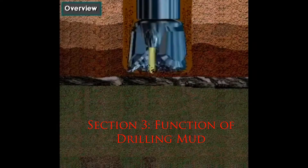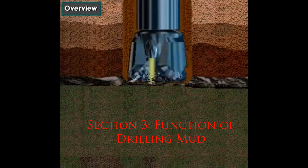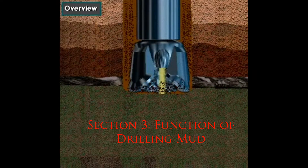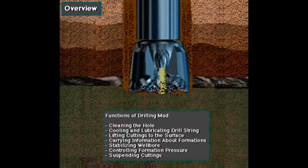When circulated down the drill string and up the hole, drilling mud serves many functions. For example, mud cleans the hole, cools and lubricates the bit and the drill string, lifts cuttings to the surface, carries information about the formations being drilled, stabilizes the wellbore, controls formation pressure, and suspends cuttings when pumping stops.